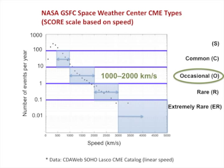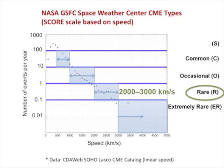At the NASA Space Weather Center, we monitor these O-type CMEs more closely than the C-type. Their travel time to Earth is around two days, and they can generate strong geomagnetic storms if their magnetic field is in the southward direction.